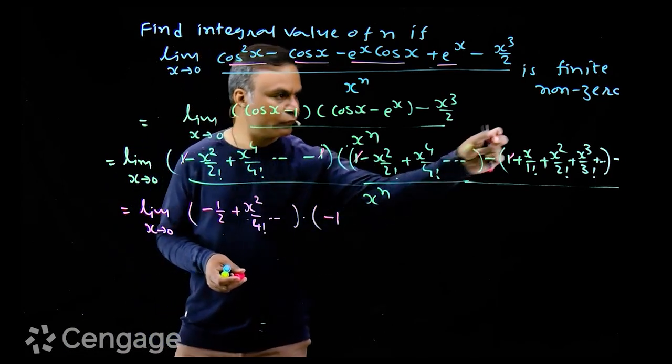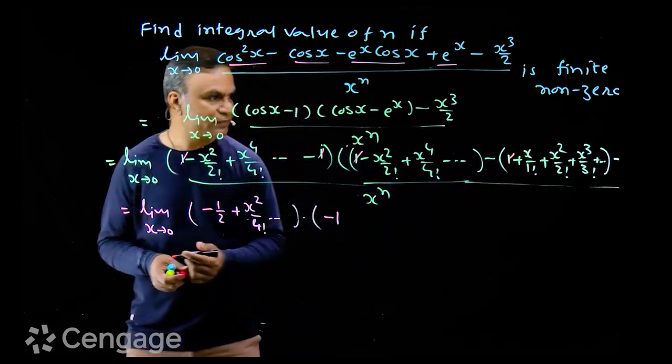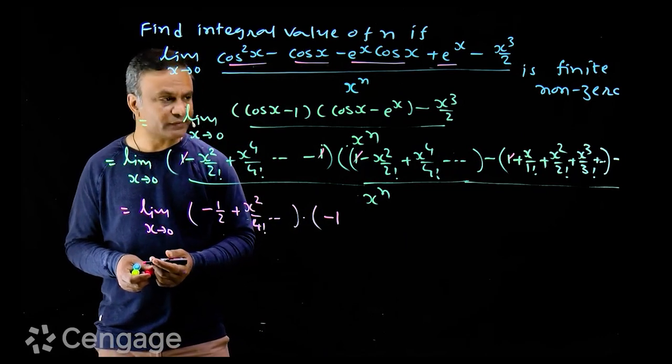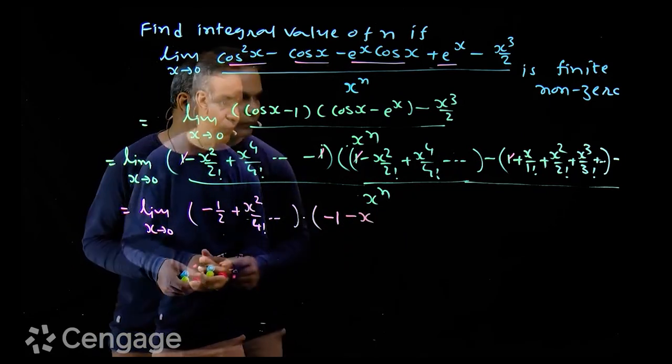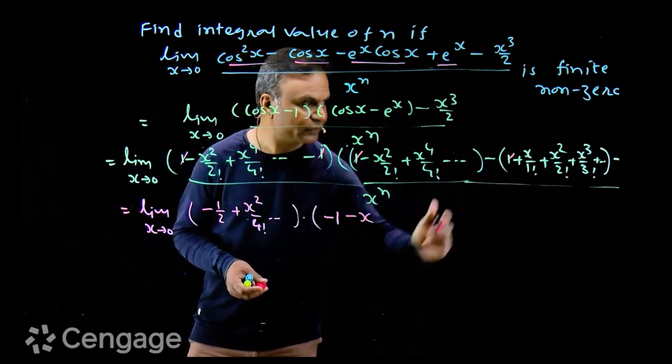So minus x square by 2 minus x square by 2 is minus x square. We have taken out x common, so I will have here minus x, then I will have minus x cube by 3 factorial.